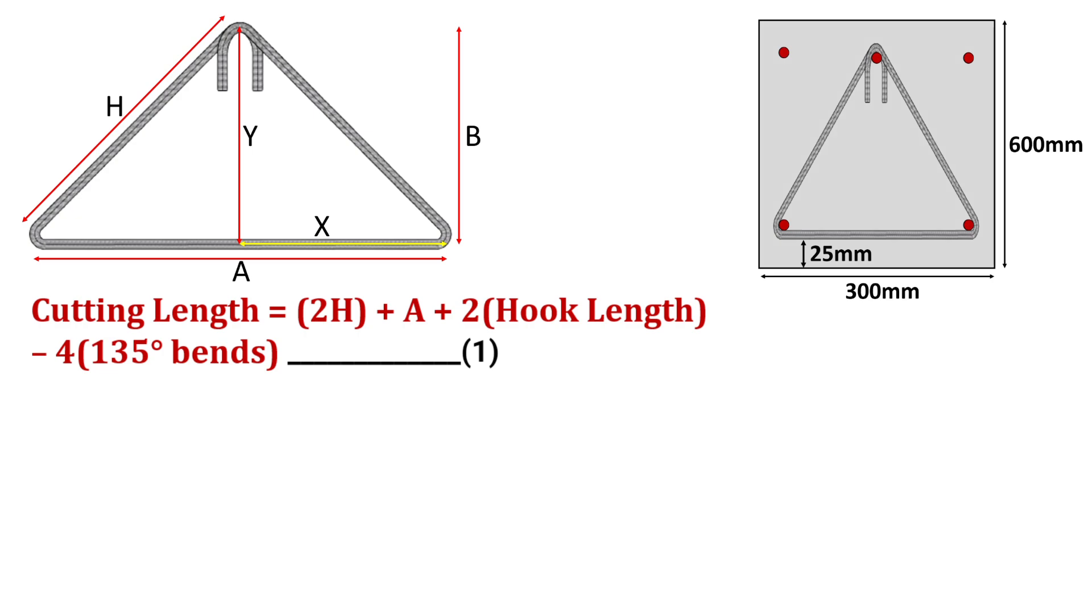To calculate the cutting length, we have the formula: 2H plus A plus twice hook length minus 4 times 135 degree bends.